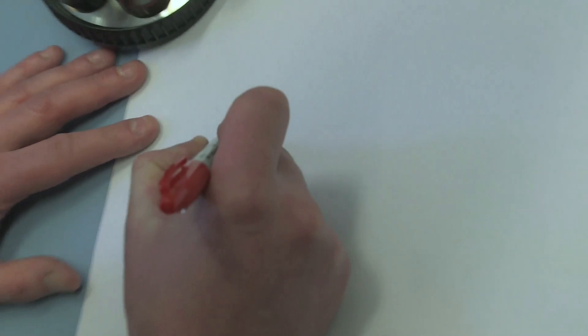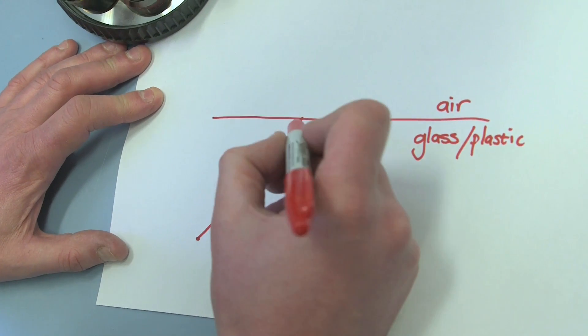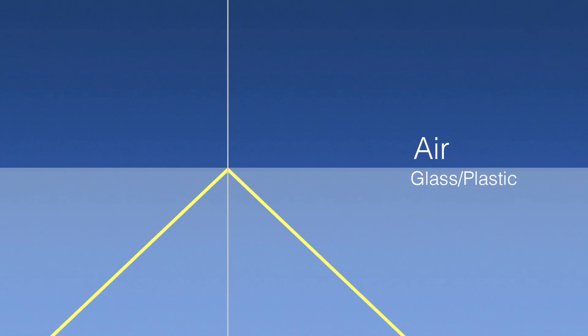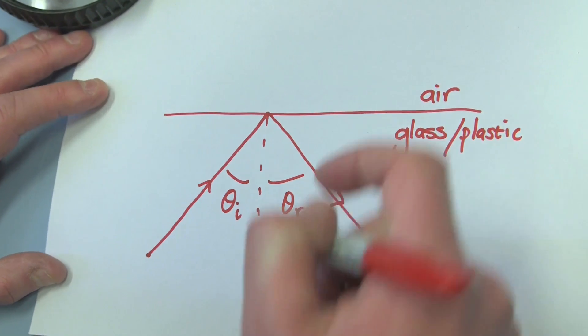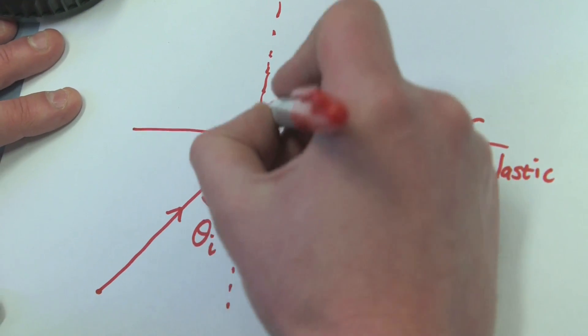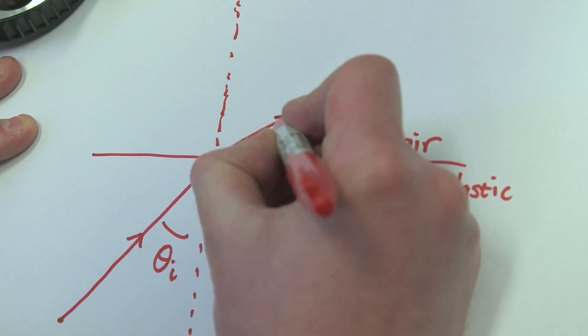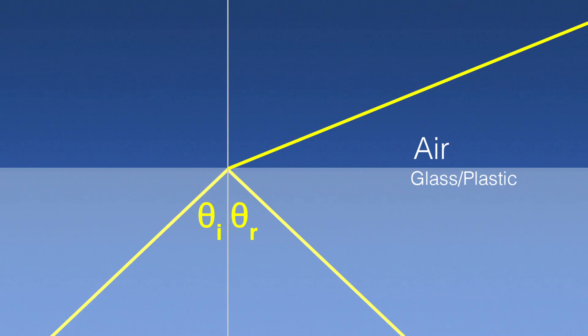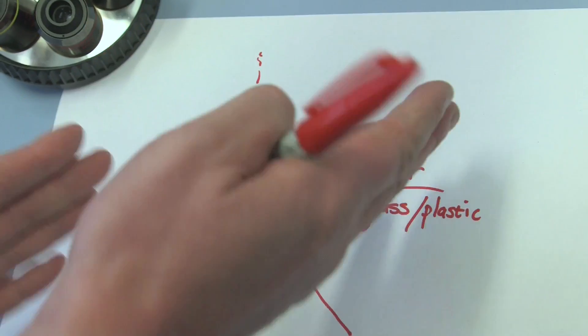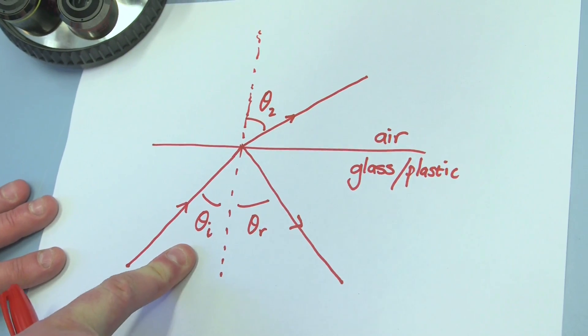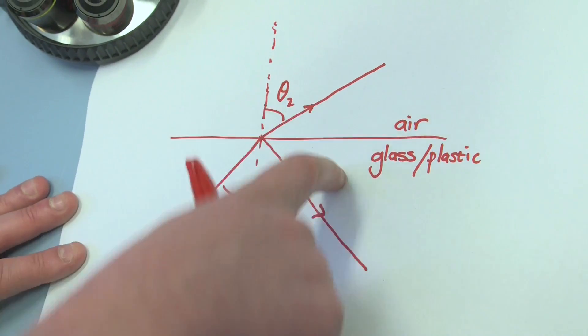The idea is simple: suppose we have a surface where on one side we have glass or plastic and on the other side we have air. If we send in a beam of light towards that surface, we see two things: a reflected ray — where the angle of incidence theta_i equals the angle of reflection theta_r — and a refracted ray coming out at a slightly different angle theta_2. That angle theta_2 is bigger than theta_i by virtue of the fact that the refractive indices of the air and the glass are different.